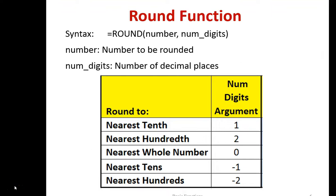The ROUND function rounds a number to a specified number of digits. It takes two arguments only: the number, and the number of digits to round to. To round to one decimal place, put 1 as the second argument; two decimal places, put 2; nearest whole number, put 0; nearest tens, put negative 1; and nearest hundreds, put negative 2.